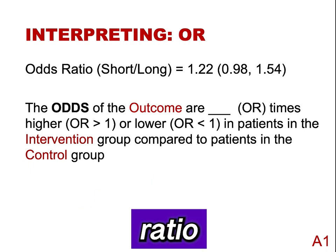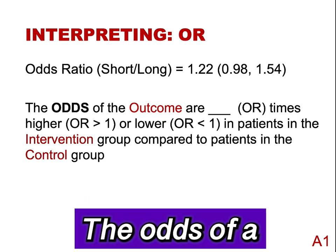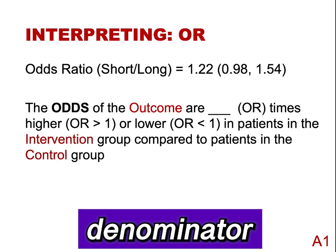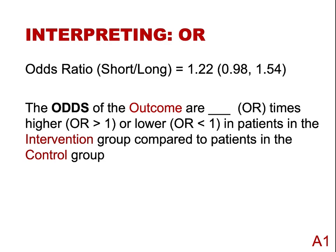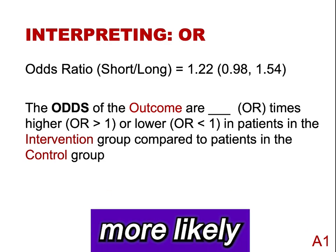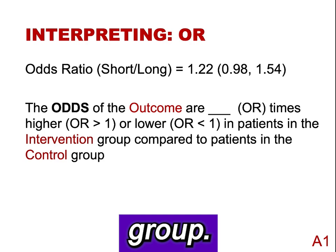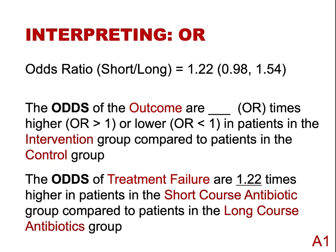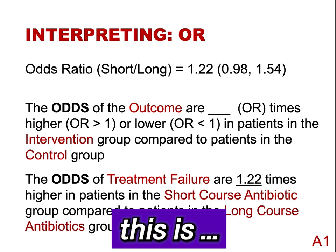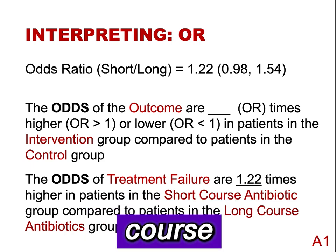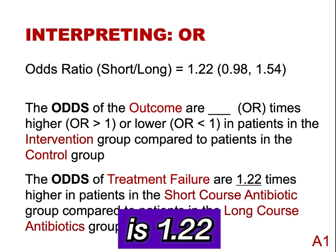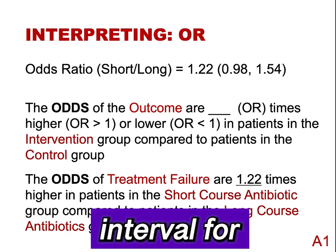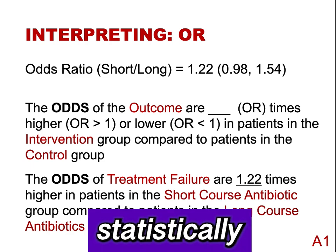We would do the same thing for an odds ratio by substituting the word odds for risk. The odds of treatment failure with a short course of antibiotics in the numerator and a long course in the denominator was 1.22. For the otitis media meta-analysis: for a patient in the short-course antibiotics group, the odds of treatment failure was 1.22 times higher than a patient in the long-course antibiotic group. The confidence interval for the odds ratio includes 1, indicating that there is no statistically significant difference.